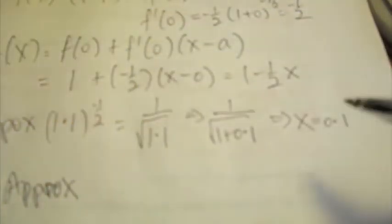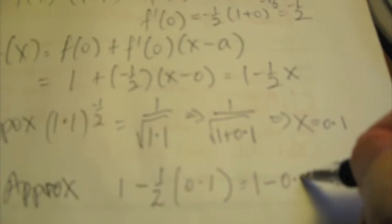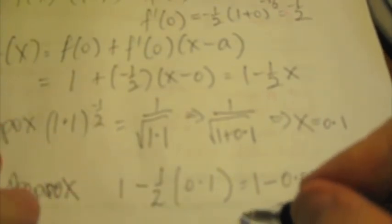So our approximation then becomes 1 - 1/2 by 0.1, which is 1 - 0.05, which of course is equal to 0.95, which is not too bad an approximation.